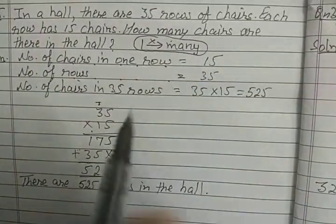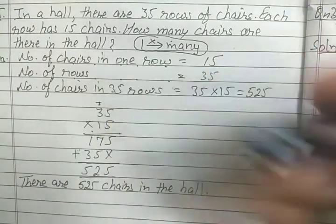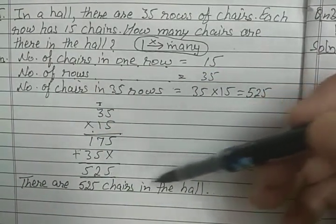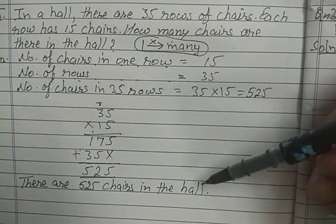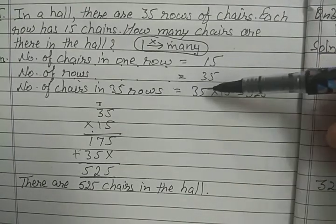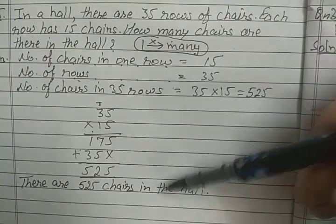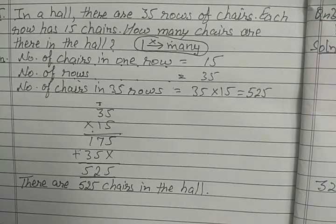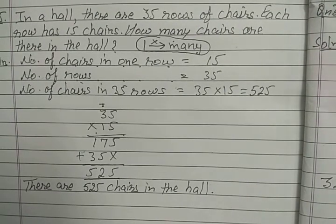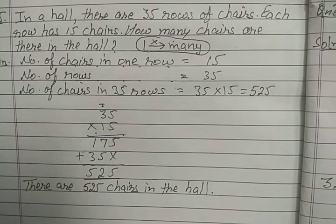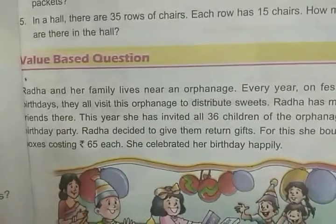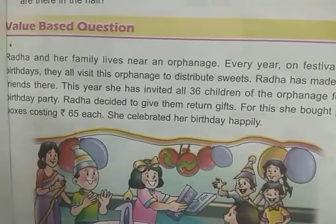Because the question is how many chairs are in the hall, the answer is 525 chairs hall mein hain. Although humne yahan 35 rows likha tha, kyunki poore hall mein 35 rows thi. But answer hum wahi karenge jo humse question poocha gaya hai. This is the last worksheet of this chapter and now only one question is left — the value based question. We will discuss it right now.